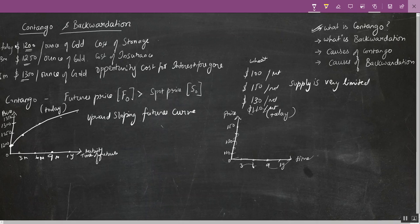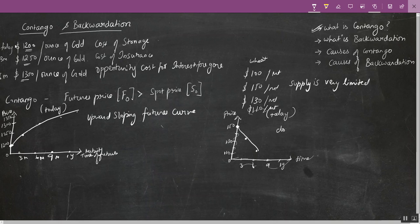So right now this spot price for this commodity is at $150, but today if I enter into a futures contract, I know situations will become better and I'll be able to get the commodity at a cheaper price. So I would be paying less for the futures than when I purchase it in the spot market currently. This kind of situation is nothing but a backwardation situation — it is an inverted forward curve, a downward sloping futures curve.